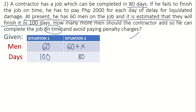Now let's determine the type of proportion. If the number of men working increases, will the number of days to complete the job also increase? The answer is no — because if you have more men working, the number of days to finish will be lesser. The direction is opposite, so the type of proportion is indirect.